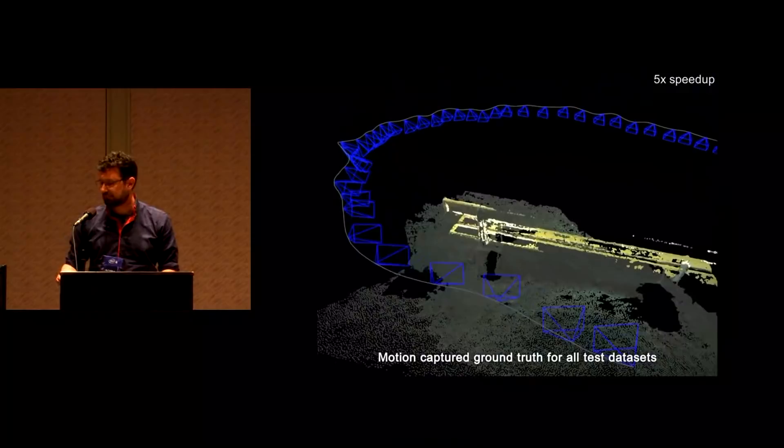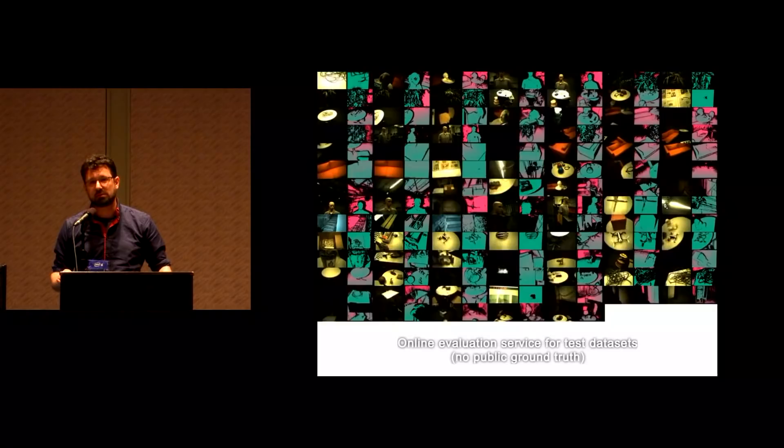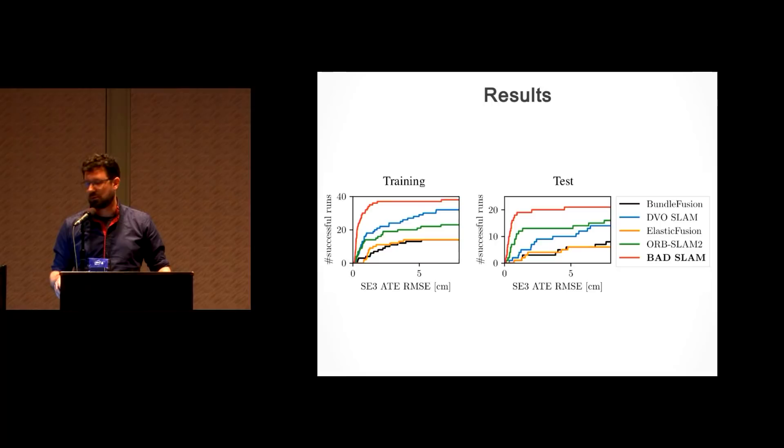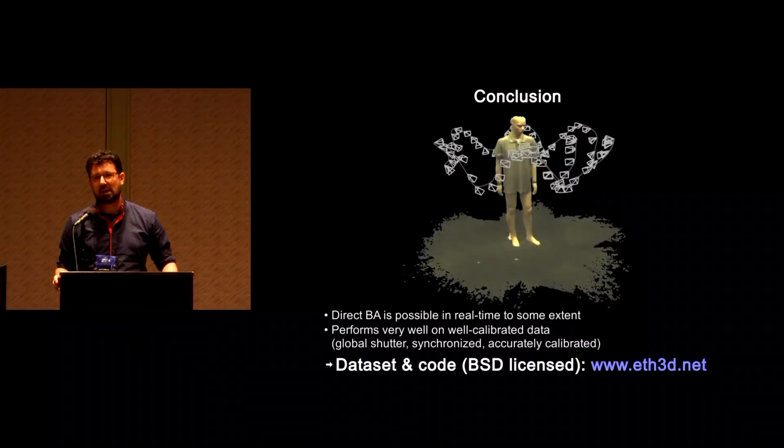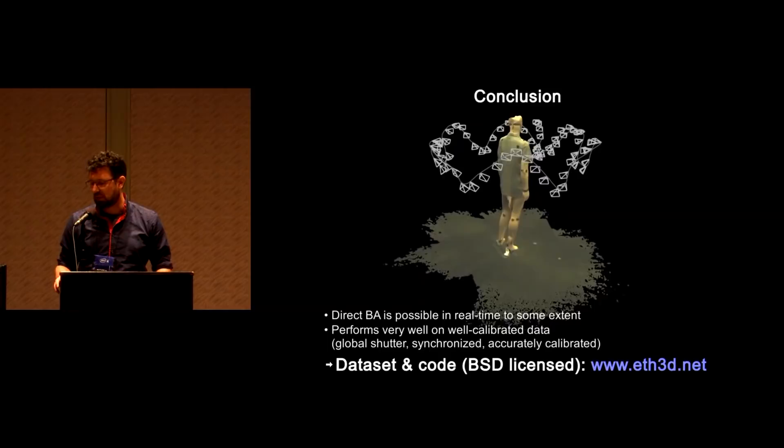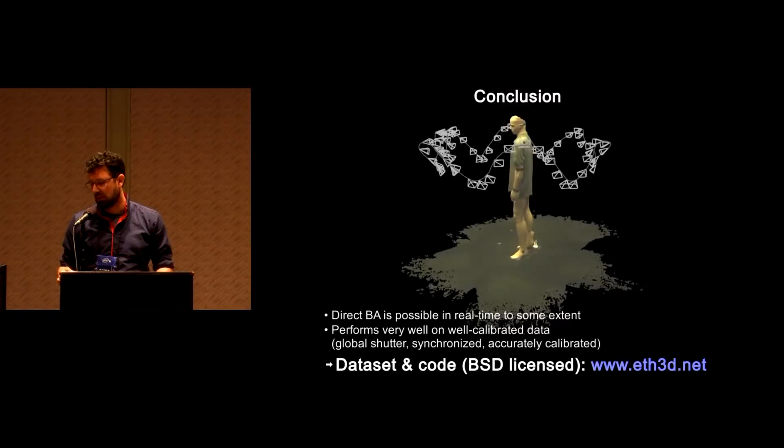So on this well-calibrated benchmark, what we have is 61 training and 35 test sequences where we withhold the ground truth of the test sequences and rather make an online service available for evaluation. What we see on this well-calibrated data set is that direct methods such as DVO-SLAM and our method can outperform ORB-SLAM2 with our method performing best. So to summarize, what we've shown is that direct bundle adjustment is feasible in real time as long as the scenes are not too large and performs very well if you get very good input data, well-calibrated input data. And we make our data sets and code available at eth3d.net.